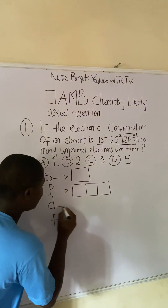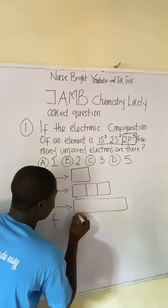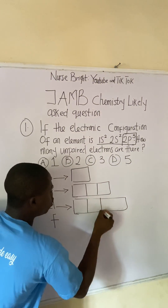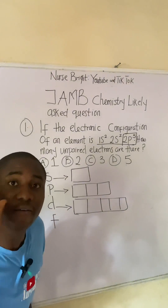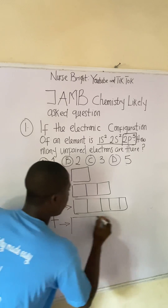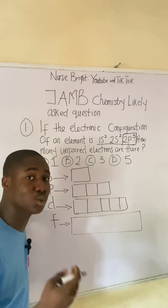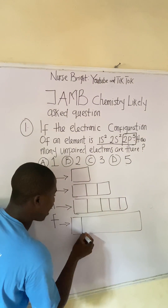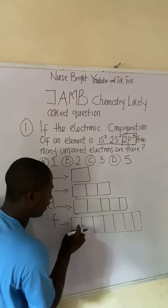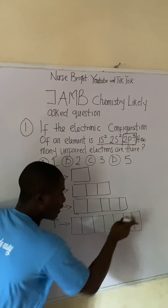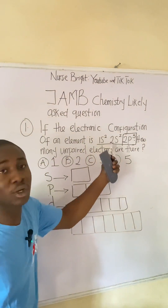For the d orbital we draw five boxes — one, two, three, four, five. For the f orbital we draw seven boxes — one, two, three, four, five, six, seven. All of these must be noted. Now for this particular question, the electronic configuration ends with which orbital? The p orbital.